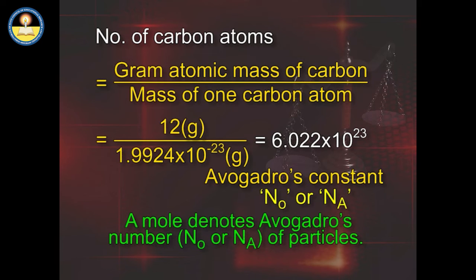Avogadro's number of particles of any substance is expressed in the form of a term called mole. In other words, a mole denotes Avogadro's number — N₀ or Nₐ — of particles.